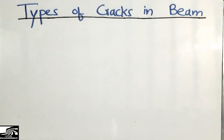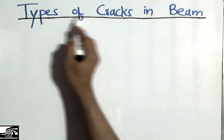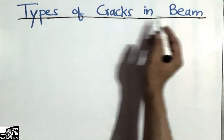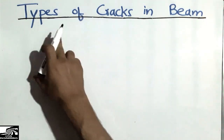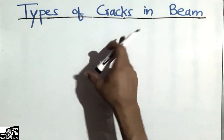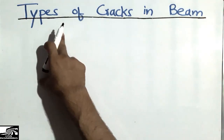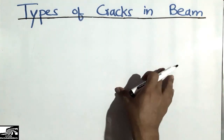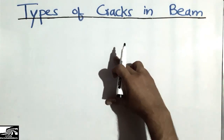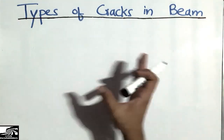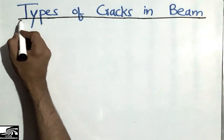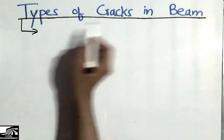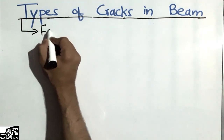Hello guys, welcome back to the C1 Engineering YouTube channel. Please subscribe for more C1 Engineering videos. Today our lecture is about the types of cracks in beams. First, I will discuss the main types of cracks which occur in beams, and then I will show you where these cracks occur — at what location, either in the support or at the midpoint.